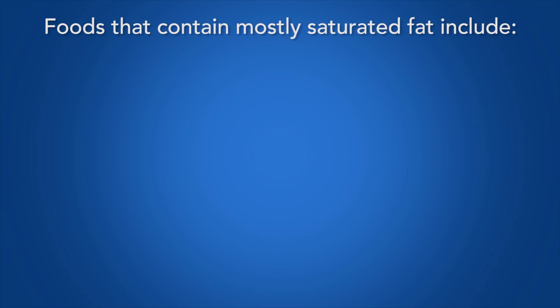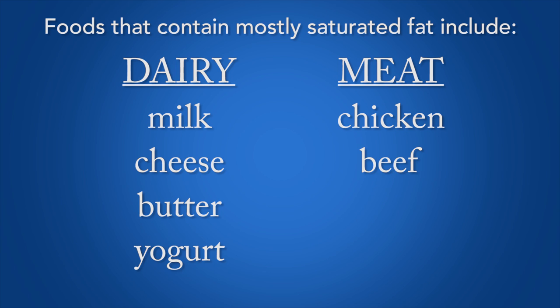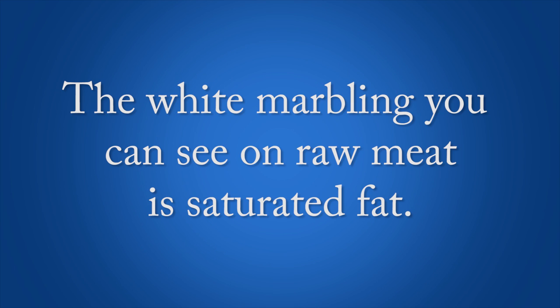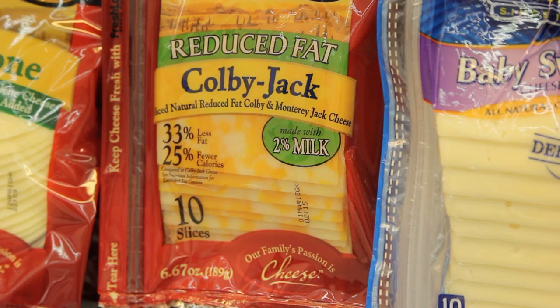Foods that contain mostly saturated fat include dairy products like milk, cheese, butter, and yogurt, and meats like chicken, beef, and pork. In fact, the white marbling you can see on raw meat is saturated fat. When choosing these foods, aim for lean, low-fat, or fat-free varieties.